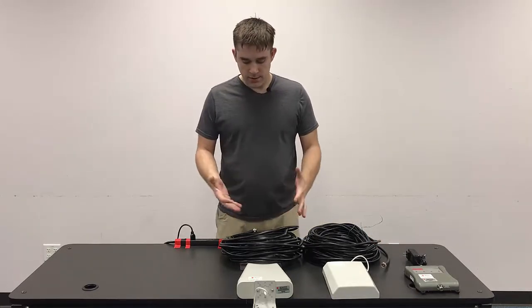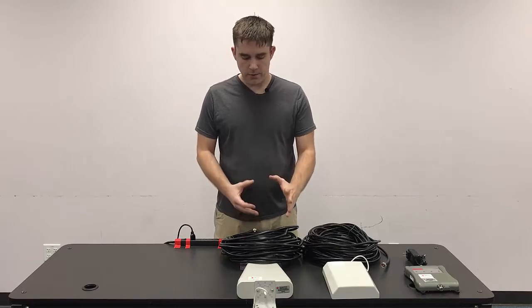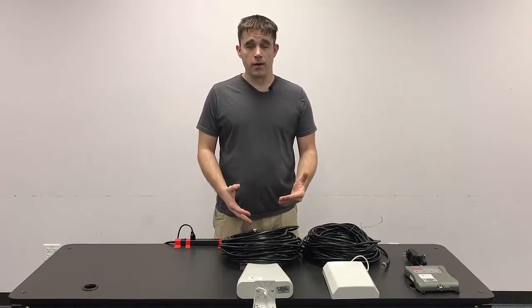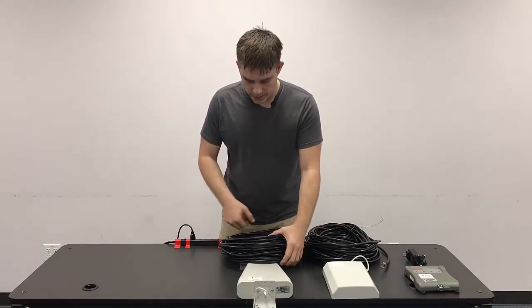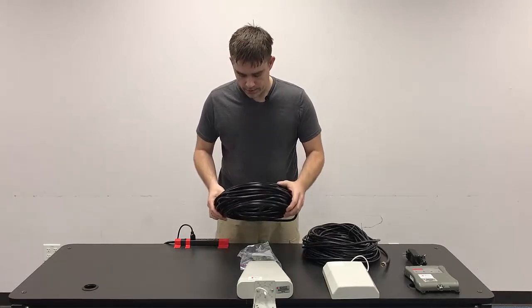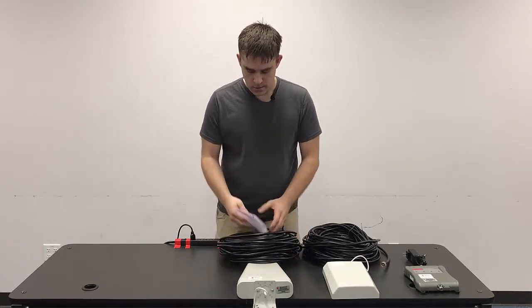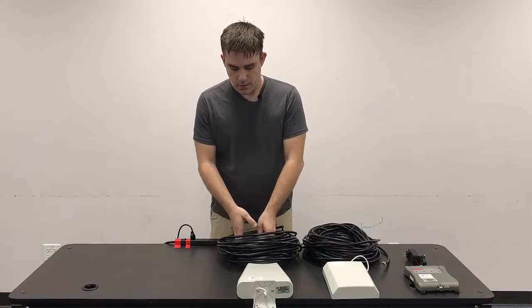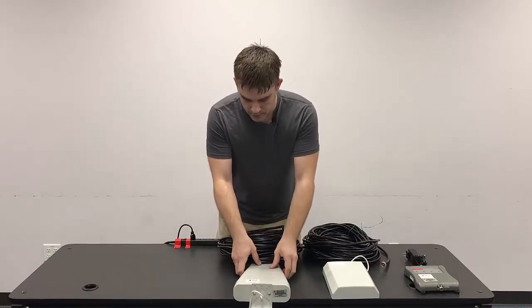In the DTP, the first section of setup is installing the outdoor antenna. For that section, you'll need the one section of the coax, the mounting hardware, and of course the antenna itself.